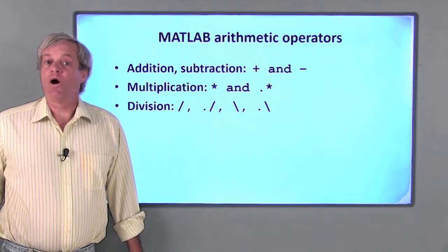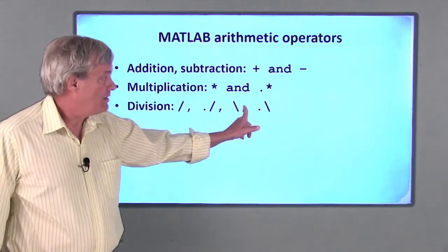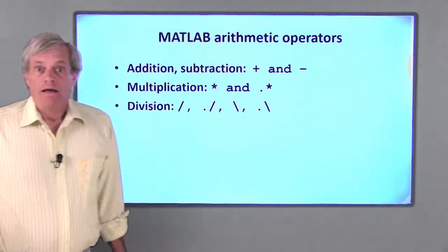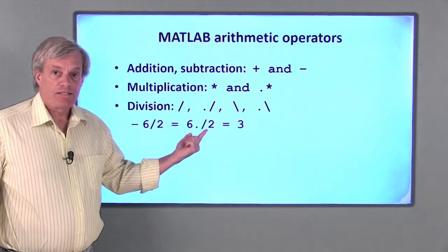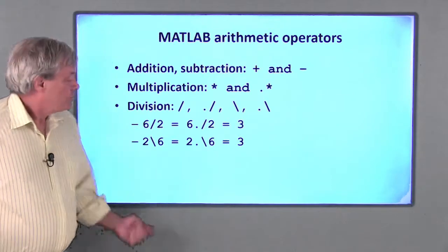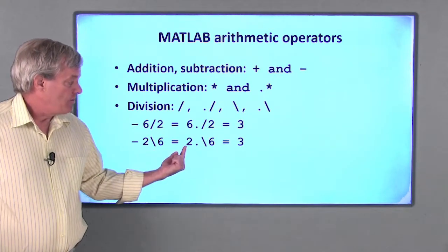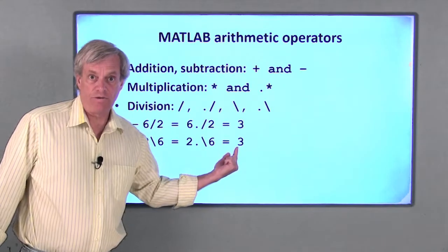The numerator is always on what I consider to be the uphill side of the slash, here, here, here, or here. Therefore, both six slash two and six dot slash two are six divided by two, or three. Two backslash six or two dot backslash six are six divided by two, which is also three.